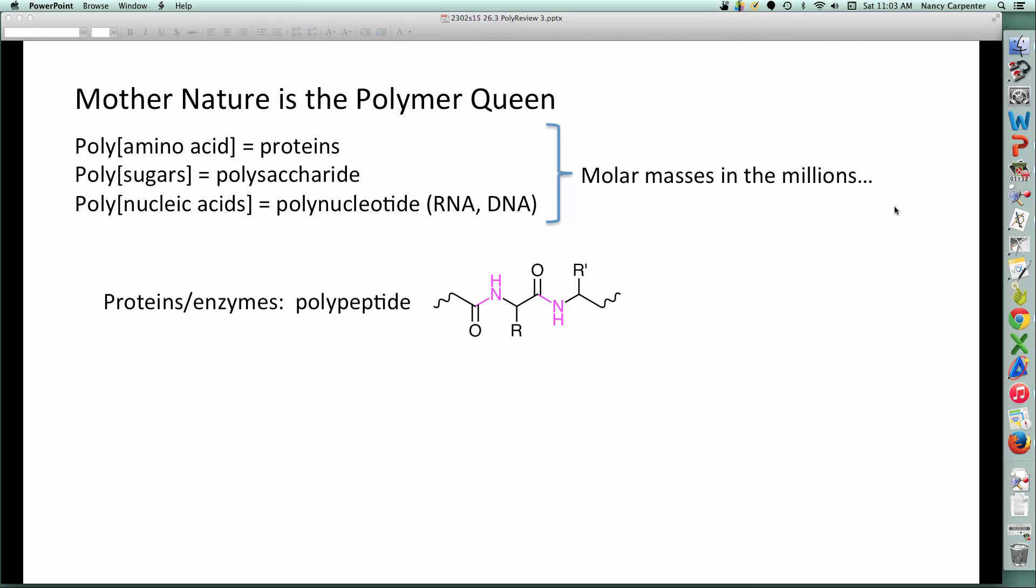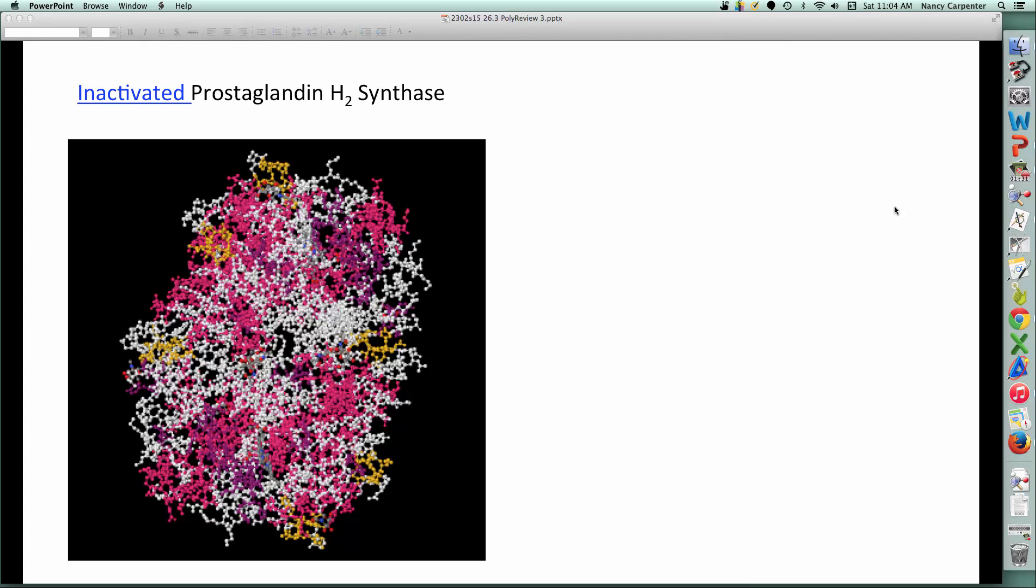So we've already seen some polymerized amino acids in the forms of proteins and enzymes. That's a polypeptide, and as you can see from the highlighted amide linkages, they're polyamides. Here is a beautiful example of one that certainly illustrates just how incredibly large these molecules are. This is a prostaglandin synthase. The primary structure is the kind of structure that we're used to talking about in OCHEM. Covalent bonds.